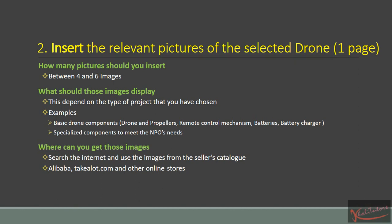What should those images display? This depends on the type of project that you have chosen. For some projects, it will be necessary for you to show tools or components such as your container — the container that they are going to use to irrigate. For some components, it is more important to show the type of camera included in that particular drone. But whatever project you choose, there are some basic drone components that you need to show: the drone and the propellers, the remote control mechanism, and the batteries or battery charging. In cases where it's difficult to find those, it's okay even if you leave them out.